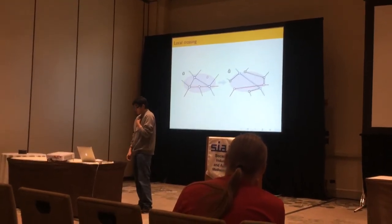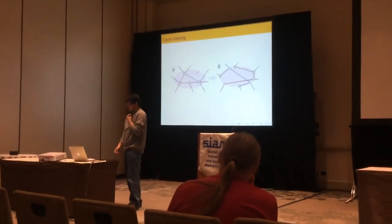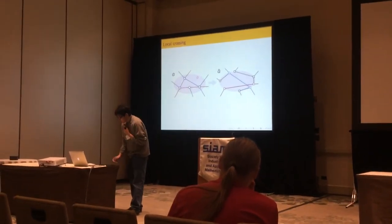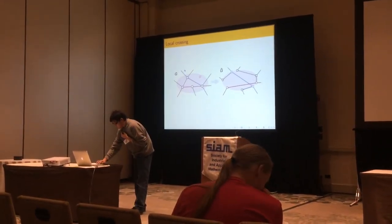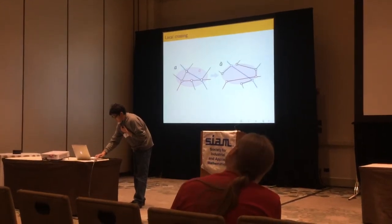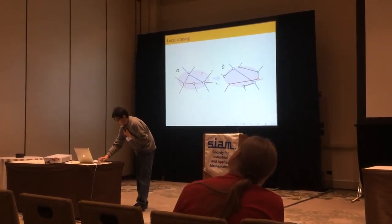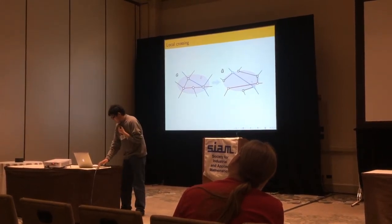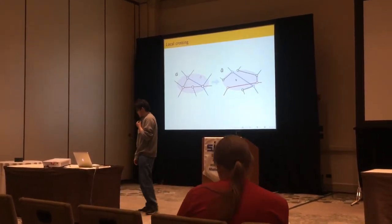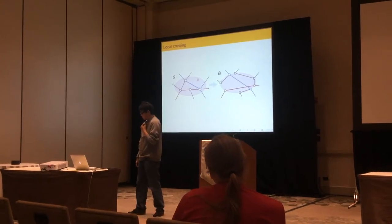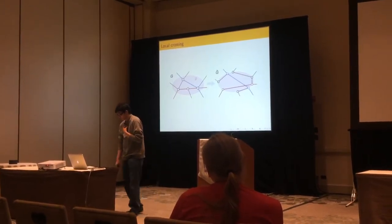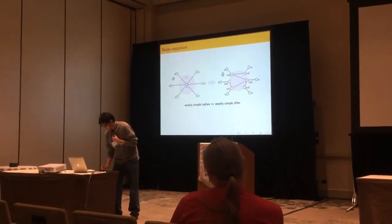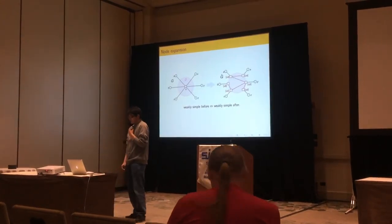So during the expansion, it's possible that we can detect some local crossings. For example, in this polygon, there's this blue path, and then a spur path. After the expansion, we create a crossing edge. And this is really easy to detect.